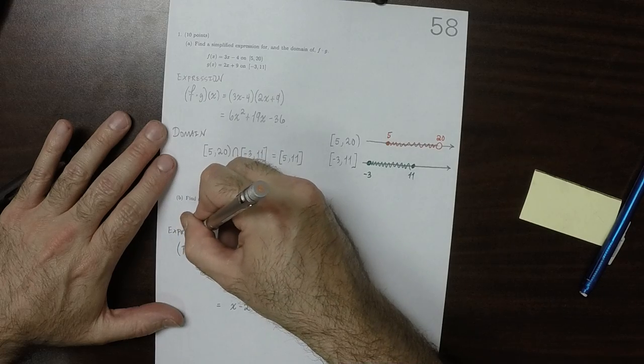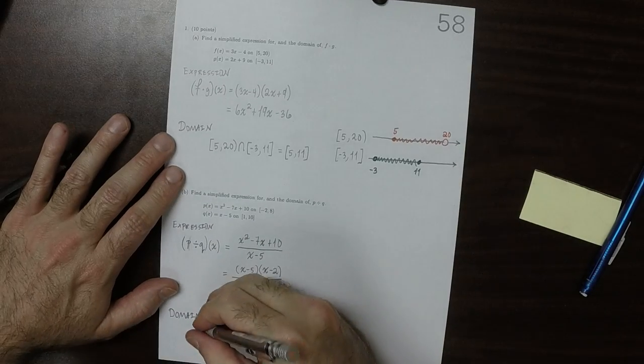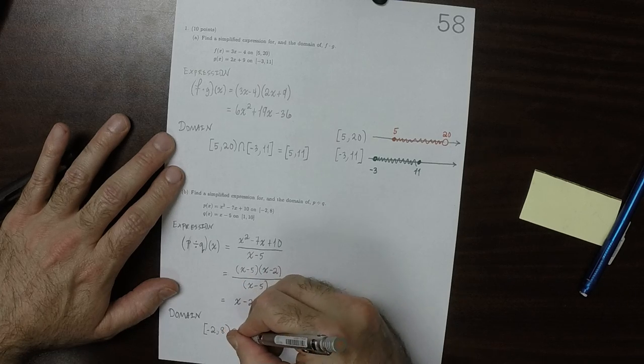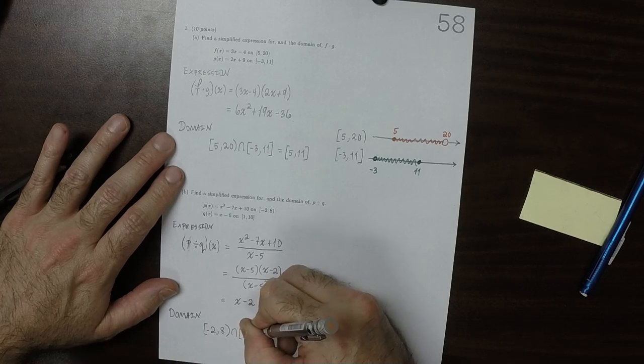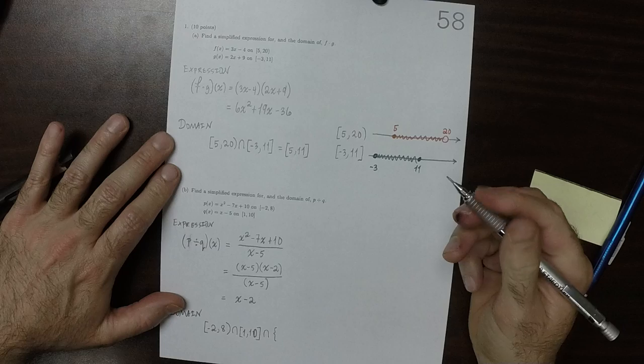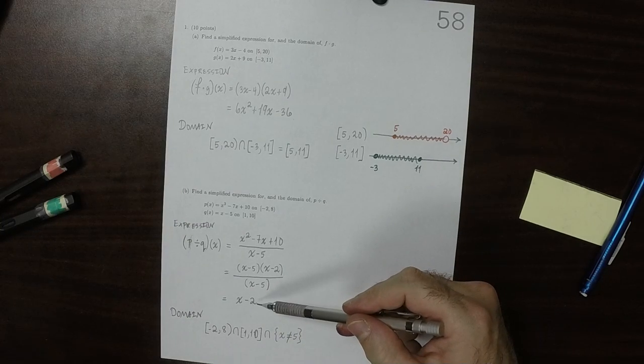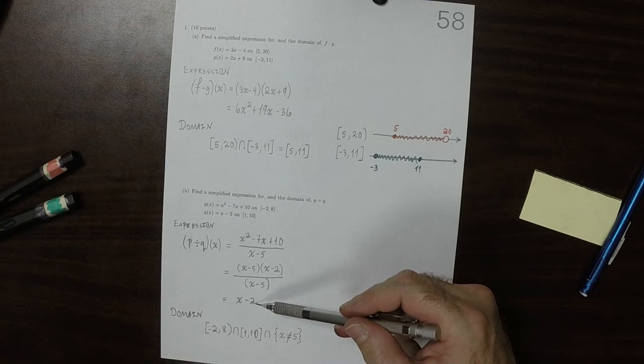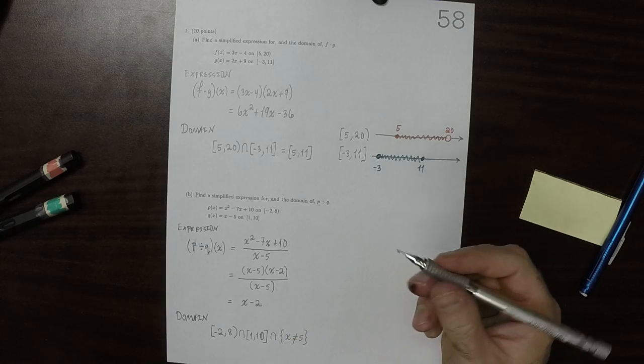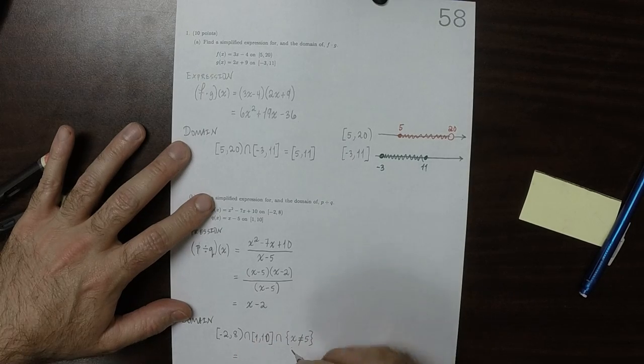The domain is going to be the intersection, just like above. So 2 to 8 intersect 1 to 10, but now we're going to have to intersect the set of all x that are not 5. This expression right here by itself could be evaluated at 5, but the fact that you cannot evaluate q at 5 means that you can't evaluate this quotient at 5 either. So this answer will be 1 to 8 but not including 5, so that'll be 1 to 5 union 5 to 8.